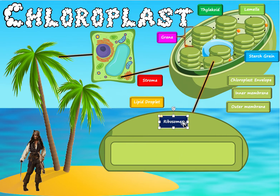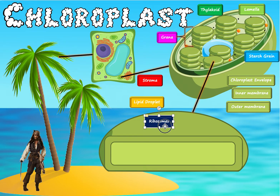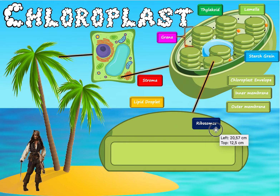Ribosomes are these very small dots — not the yellow ones, but the tiny dots. Just like in humans, ribosomes are responsible for making proteins. They translate your DNA — they are little molecular machinery that help make proteins, which are crucial to allow everything to function properly inside the plant.